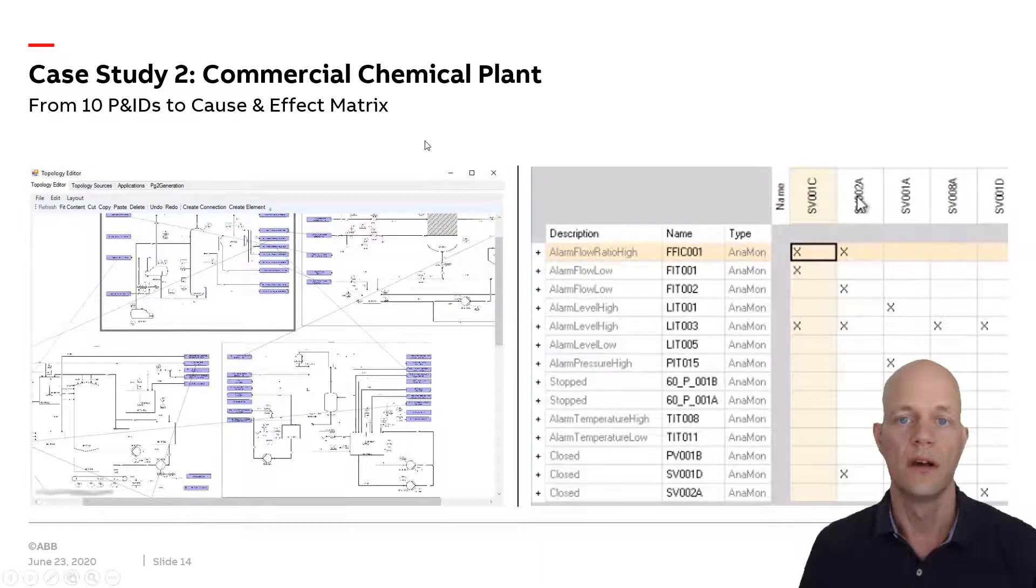We decided to apply it on a bigger example. This is our second case study with a commercial chemical plant where we had 10 P&IDs available for a plant segment. We used those P&IDs to generate our CAYENNE topology models. We generated the interlocking logic depicted as a cost and effect matrix. The processing of the topology model was doable in a couple of minutes, so the performance was good. We are confident the method scales for even larger models.